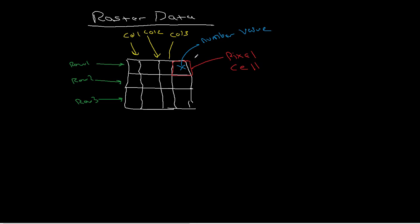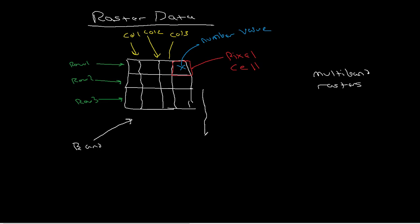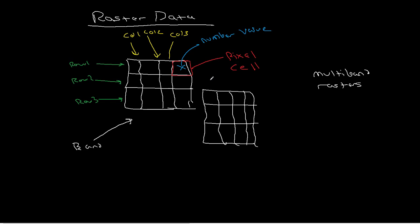Now that we're dealing with remote sensing, there are two additional pieces we need to be aware of. The first is the fact that we can have multi-band rasters. With a multi-band raster, this entire arrangement of rows and columns — this whole thing — we would call a band. And in a multi-band raster, we can have another set of rows and columns that would be a second band.